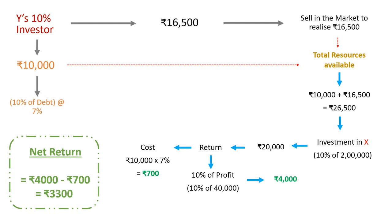The return is rupees 4,000 and the cost is rupees 700, so the net return is rupees 3,300 — the same return that was earned in firm Y. Apart from that, there is also a surplus of rupees 6,500, which is rupees 26,500 minus rupees 20,000. By moving from Y to X, the investor's position has improved, demonstrating that the value of the firm is not ultimately affected by the debt and equity composition.